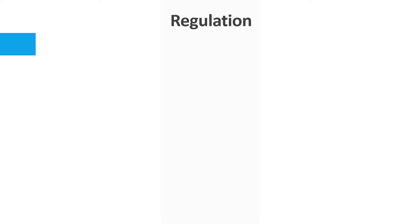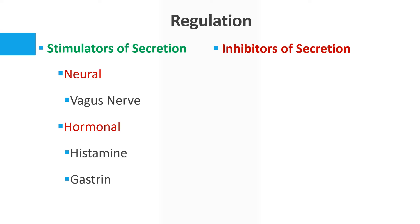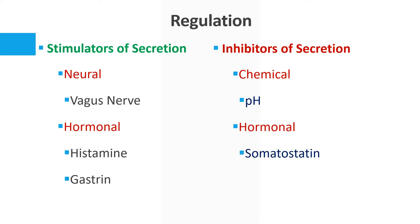Next we move on to the regulation of gastric acid secretion. We have stimulators and inhibitors. The stimulators can be divided into neural — mainly the vagus nerve — and hormonal, which include histamine and gastrin. The inhibitors of secretion are mainly chemical, including pH, and hormonal, including the hormone somatostatin.